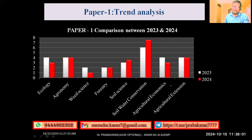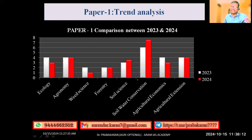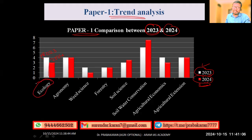We will now look at whether this trend is repeating or not by comparing with the previous year's questions. In the Paper 1 trend analysis, we are comparing 2023 and 2024. In the bar chart, white colored bars represent 2023 questions and red colored bars represent 2024 questions. From ecology, in 2023 they asked four questions whereas in 2024 they asked nearly three — almost no change, just a slight difference.